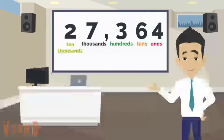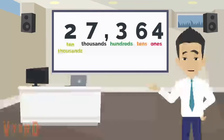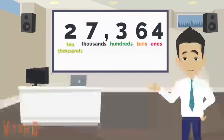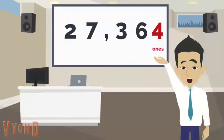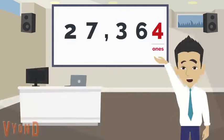We have 27,364. How are we going to tell the place value of each digit in the number? Let's begin. If I underline the digit 4, what is its place value? The place value of 4 is ones. Everybody repeat after me: ones.